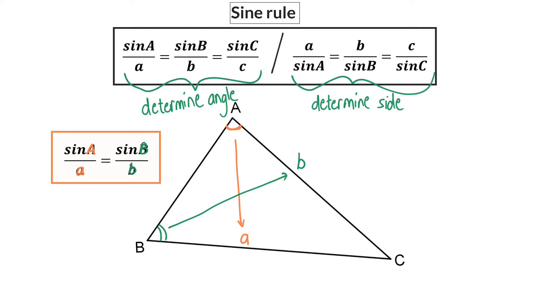This means that the sine rule can be used when you have two angles and one side, or when you have both the sides and one of the angles. Let's have a look at a few examples.